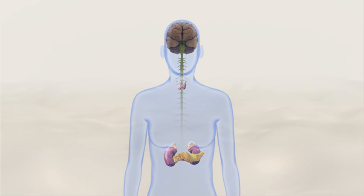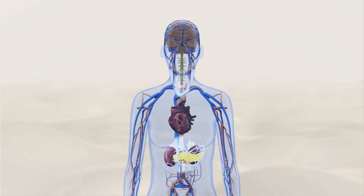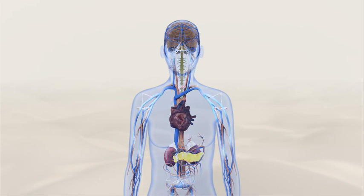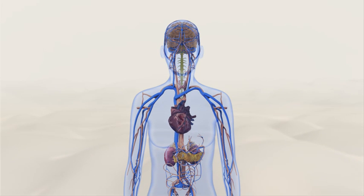The hypothalamus activates endocrine glands throughout the body. These glands release hormones that increase blood sugar levels, alertness, and help maintain arousal that will help the person respond to the stressor.